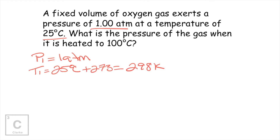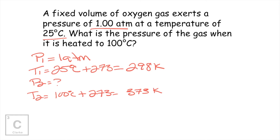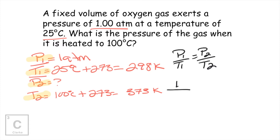We're looking for pressure two when we have a new temperature. Our temperature two is 100 degrees Celsius plus 273, which gives us 373 Kelvins. Remember Gay-Lussac's law — we're dealing with pressure and temperature. The formula is: pressure one over temperature one equals pressure two over temperature two. Plugging in our numbers: pressure one is 1 atmosphere, temperature one is 298, pressure two is what we're looking for (X), and temperature two is 373.